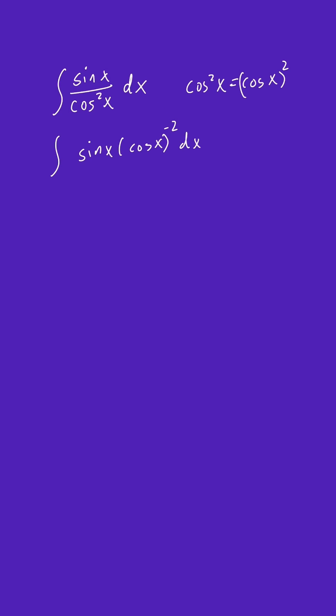So now we can apply u-substitution. So we can call this u. So u is equal to cosine x. And we'll take the derivative of that. So we'll say du dx is equal to minus sine x. And then we can say du is equal to minus sine x dx.